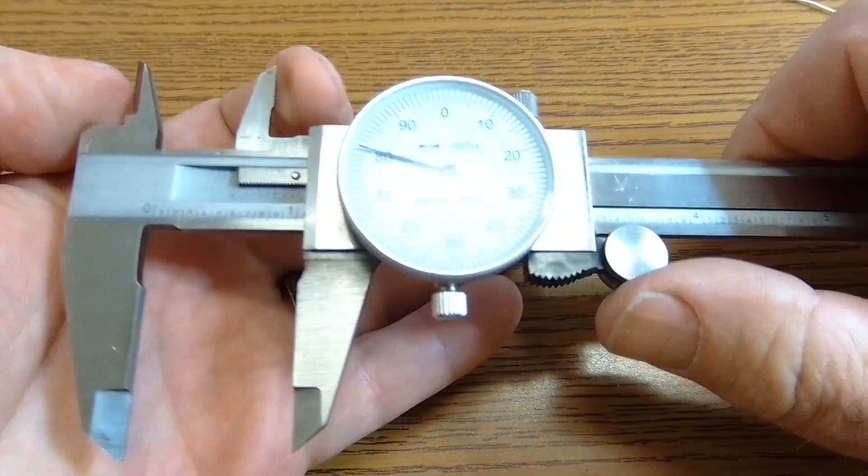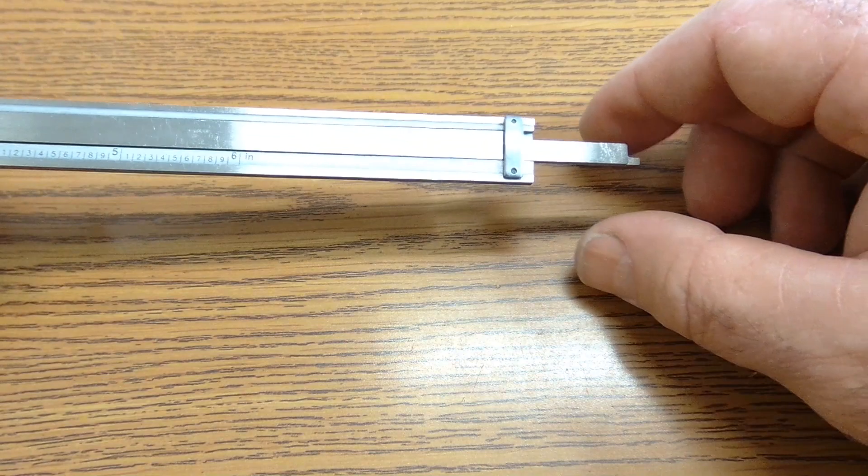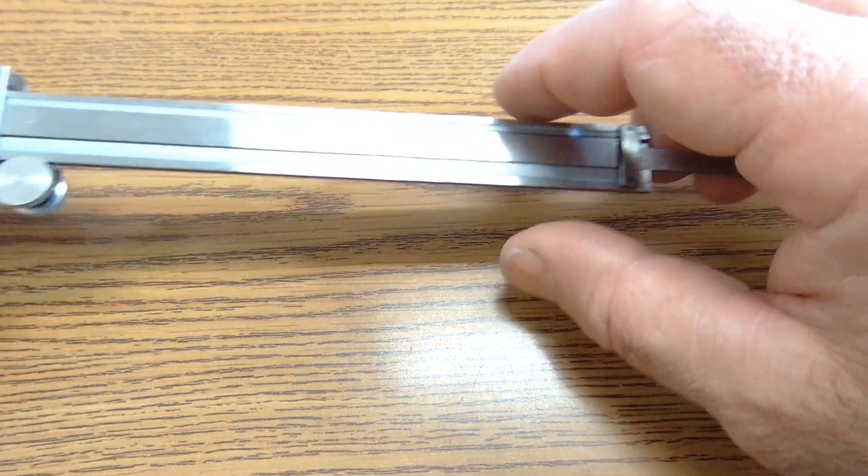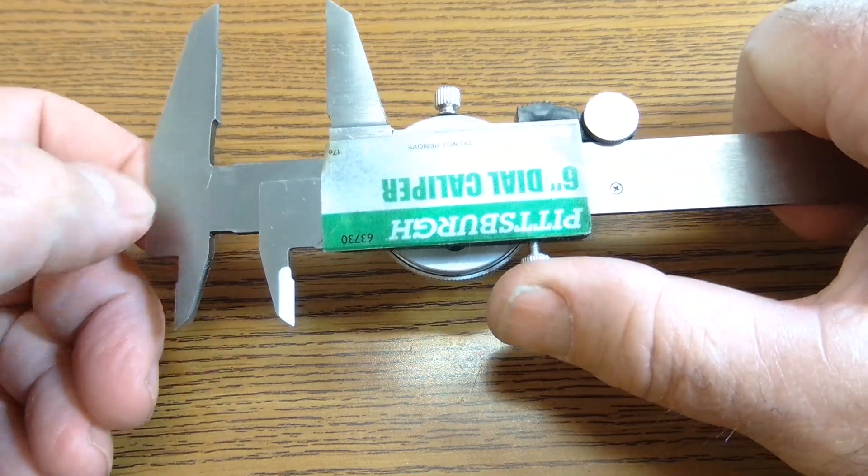One is you could use these for the inside measurement. These for the outside measurement right here. This could be for finding the depth of a hole, and then you could actually also use this right here to find the step height as well.